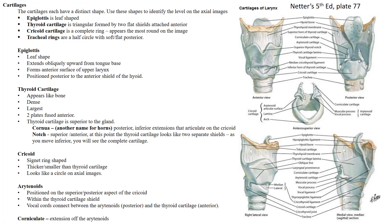The vocal cords connect between the arytenoids and the posterior thyroid cartilage. There is a vocal ligament here, and the vocal cords connect at these points — we'll examine that further when we study the vocal cords.